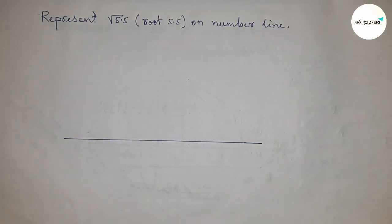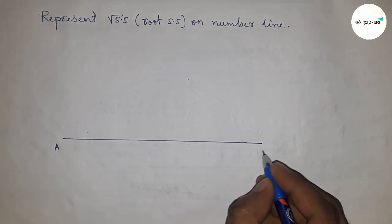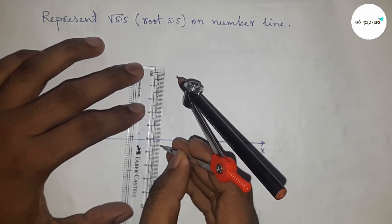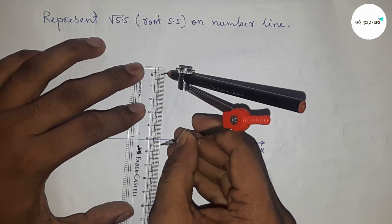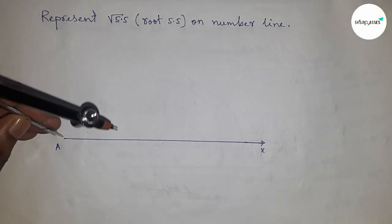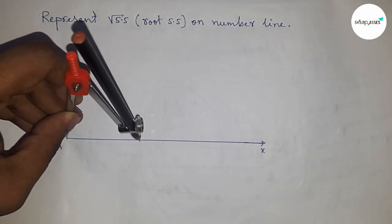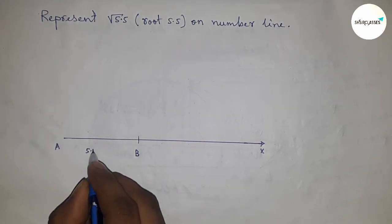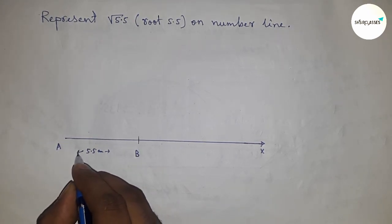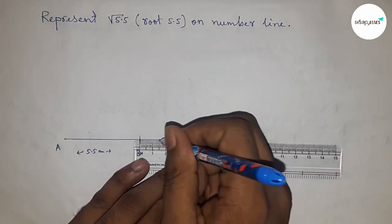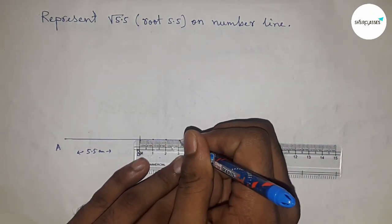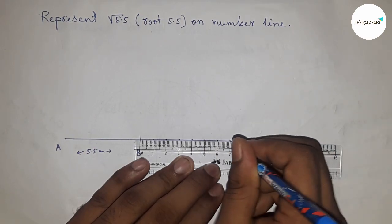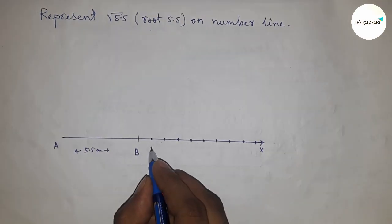First of all, drawing a line of any length — this is line AX with an arrow. Next, taking a length of 5.5 by compass and putting the compass on point A, cutting the line AX at point B. This is 5.5 centimeters.